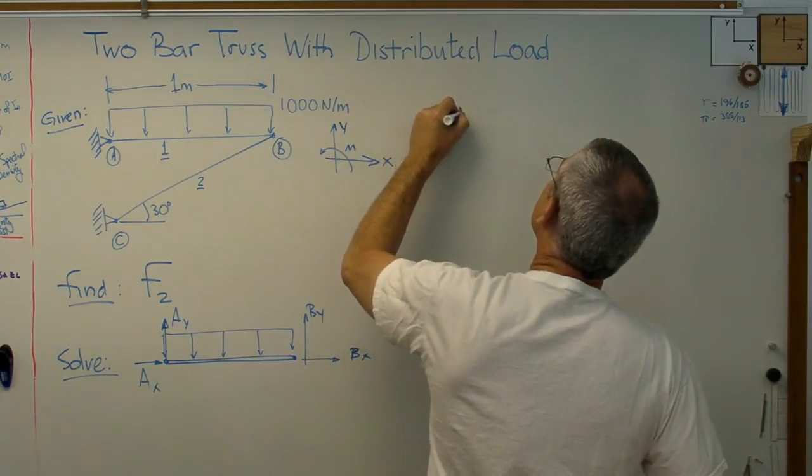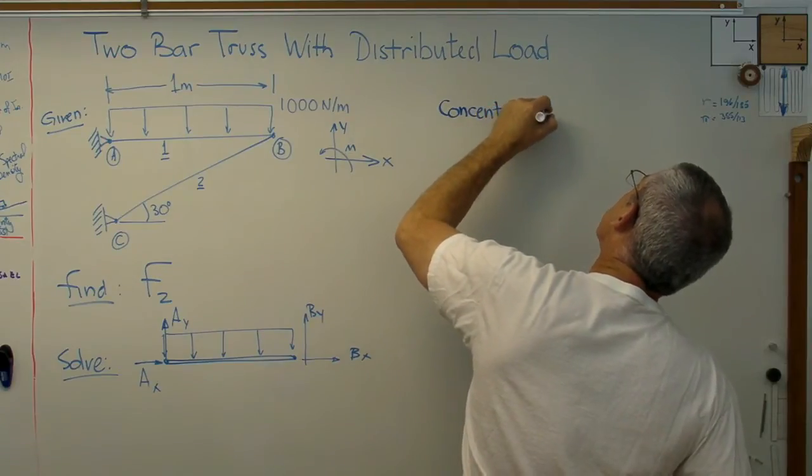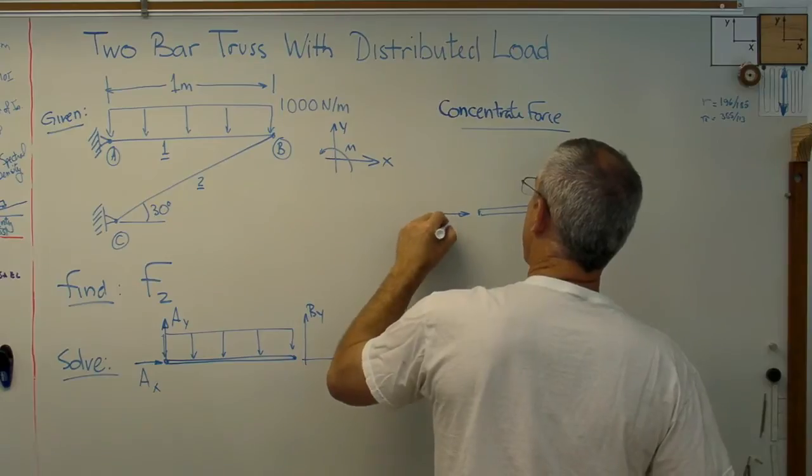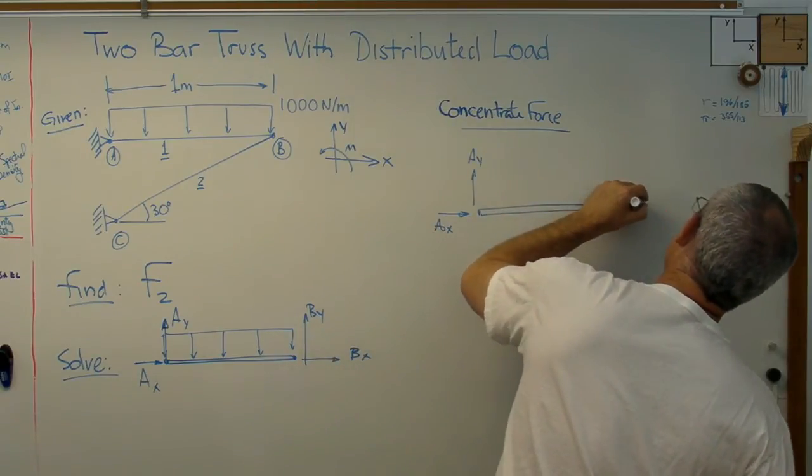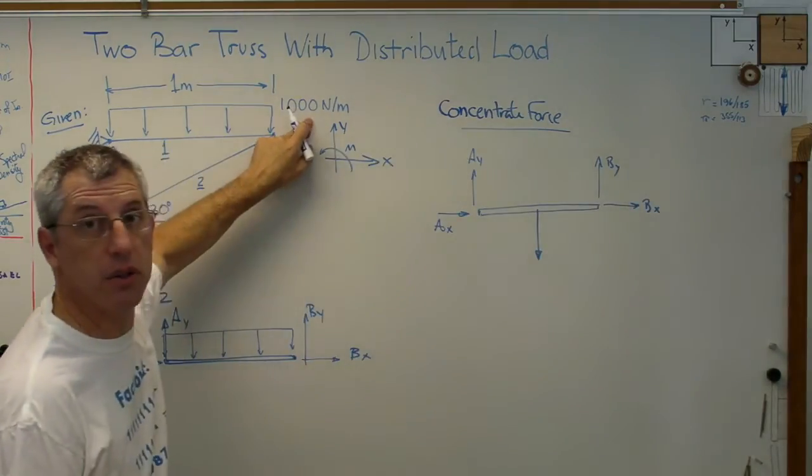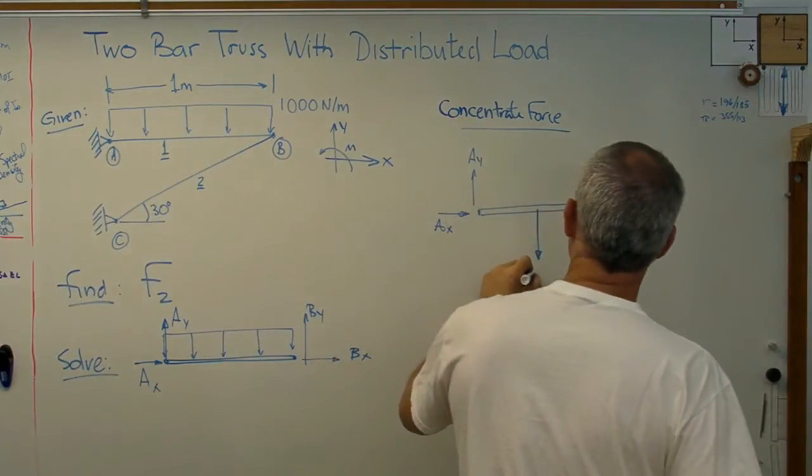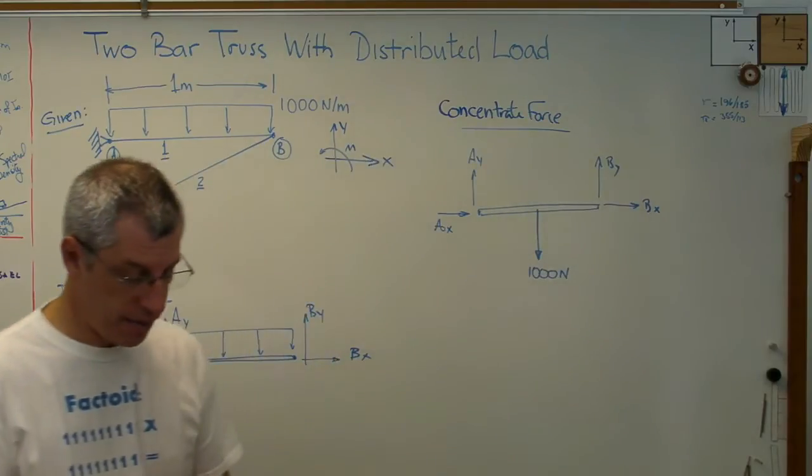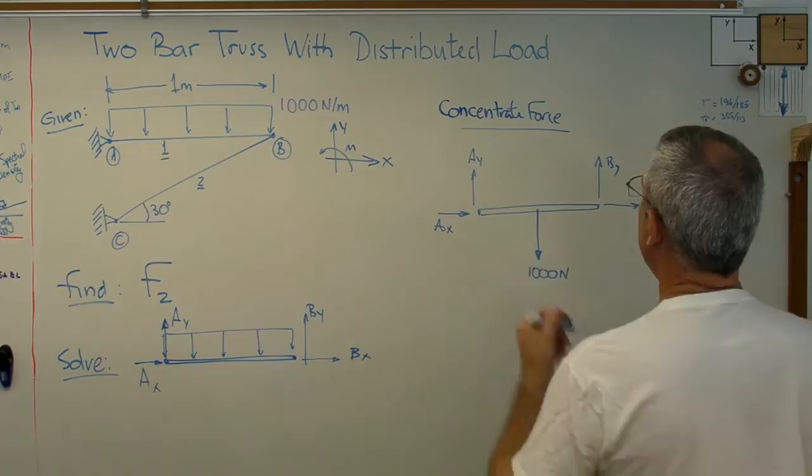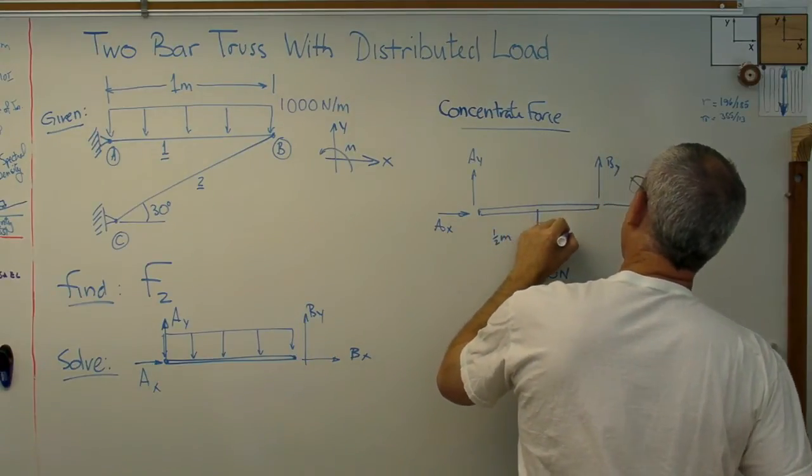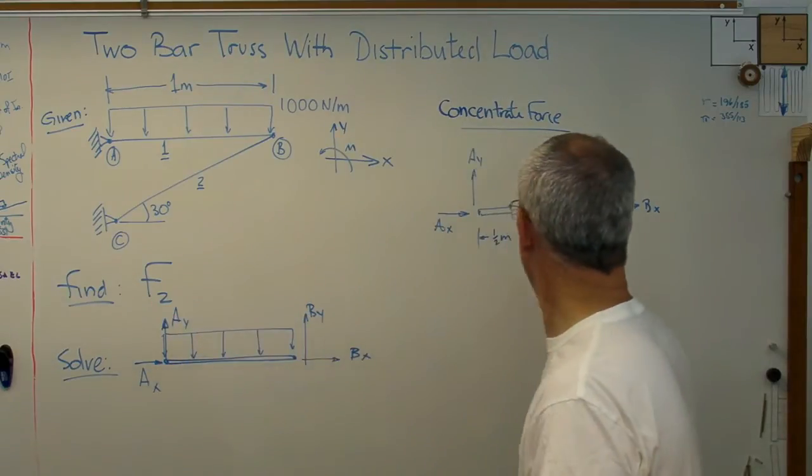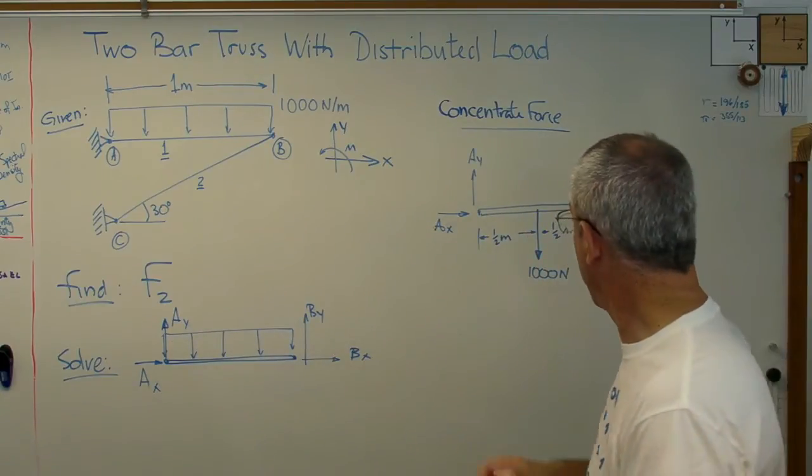We'll concentrate the distributed load. I'll draw the free body diagram with AX, AY, BX, and BY. Now I'll place one load in the middle: 1000 newtons per meter over one meter equals 1000 newtons. The bar will know the difference, but the two points won't. It's half a meter on each side because the load is evenly distributed. If this were triangular or another shape, the position would change. But since it's rectangular and applied uniformly, I place it right at the middle.